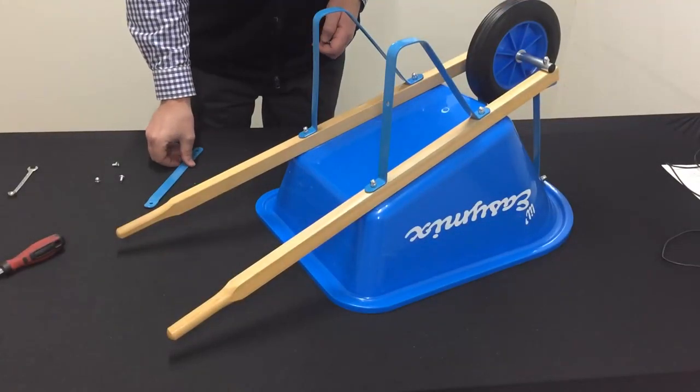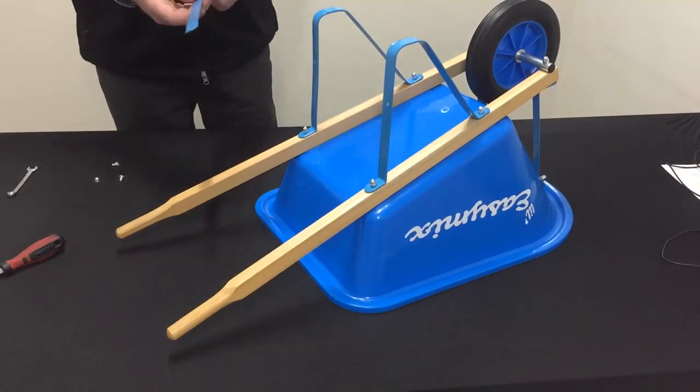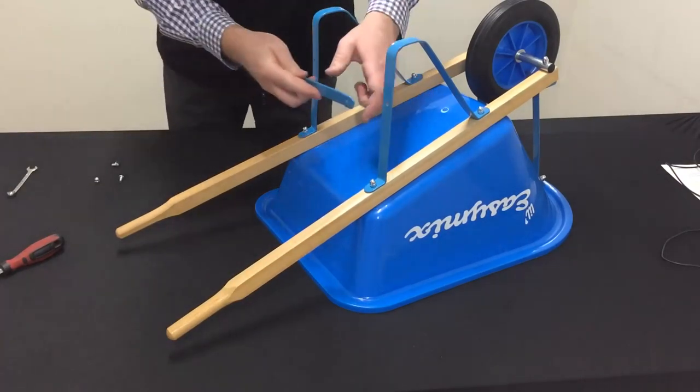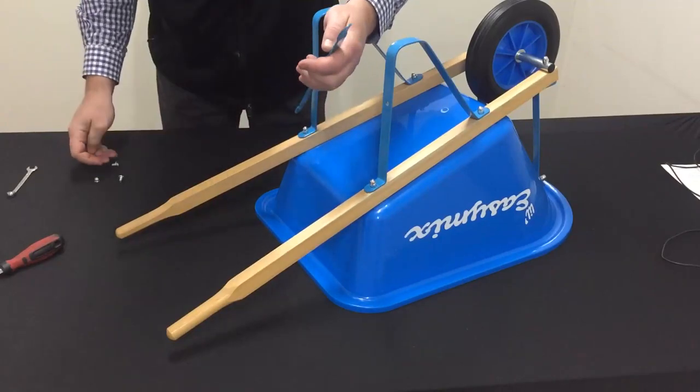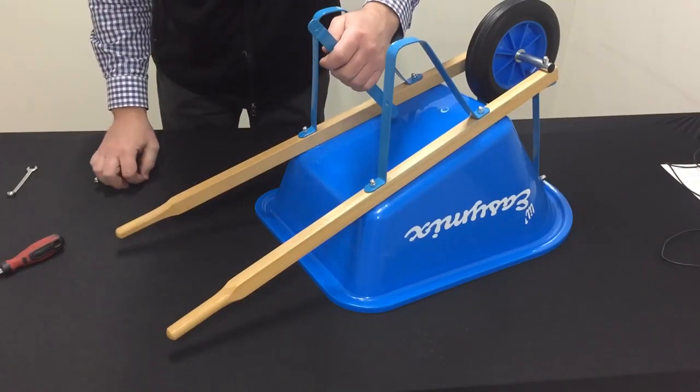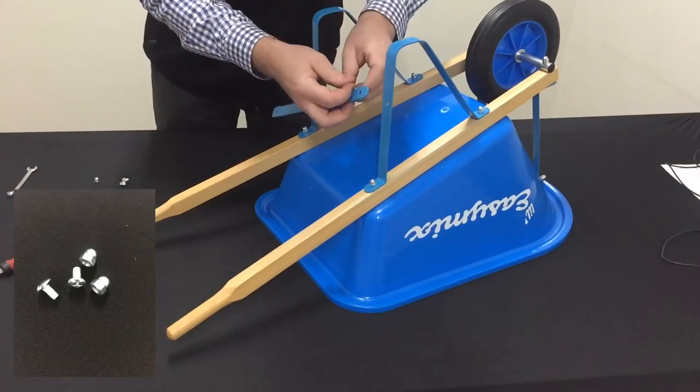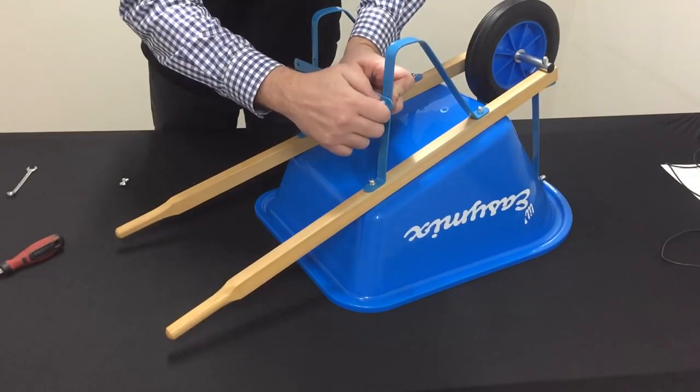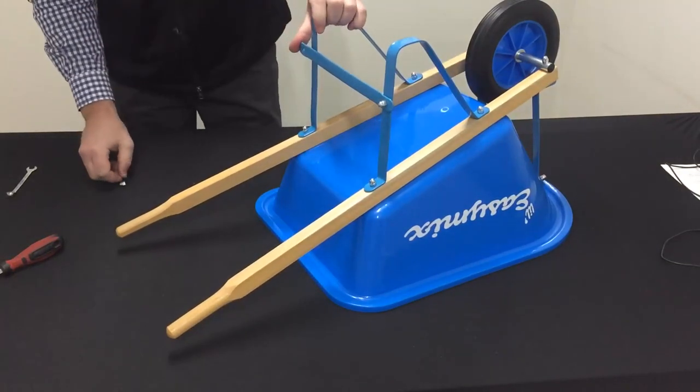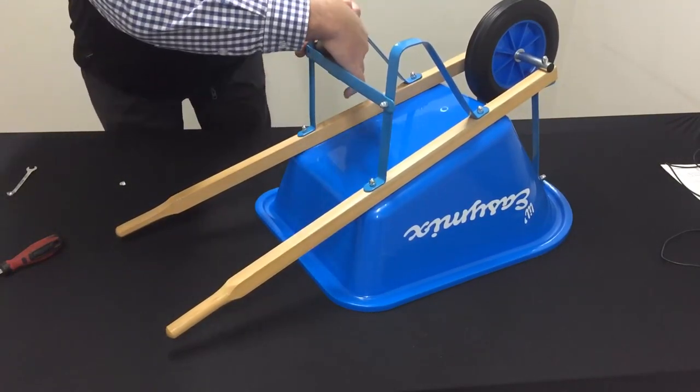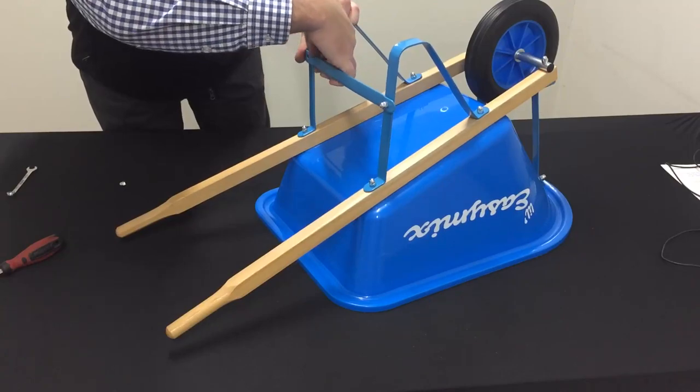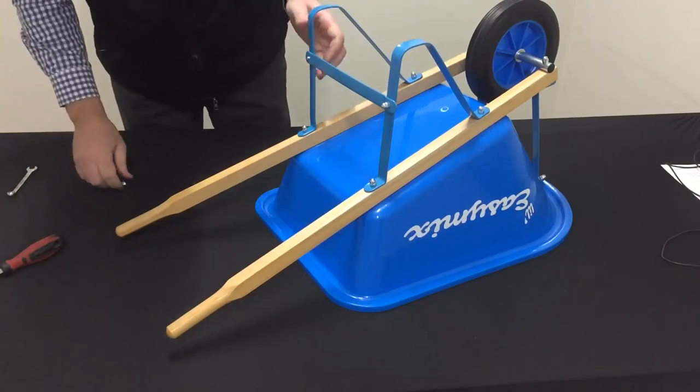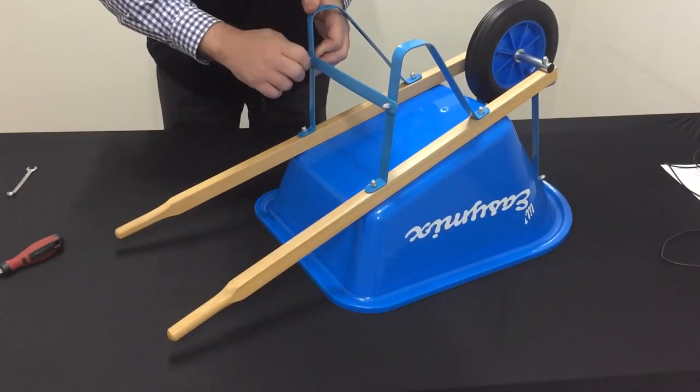Now the last step in our assembly is to take this wheelbarrow leg brace here, fit him to the back. We should have two short screws and two dome head nuts left. Straight through the back. Secure him with the dome head. Same on the other side here. Secure him with the dome head.